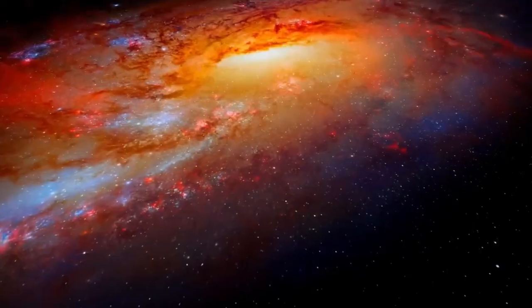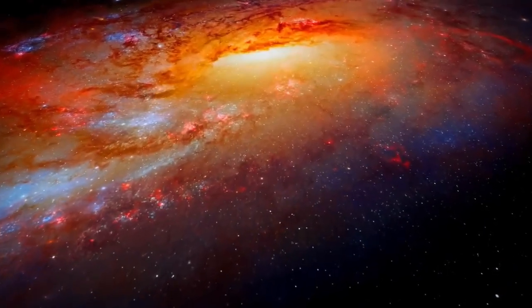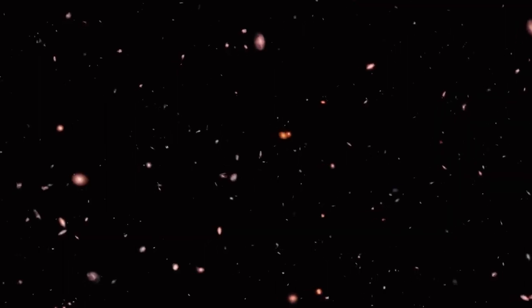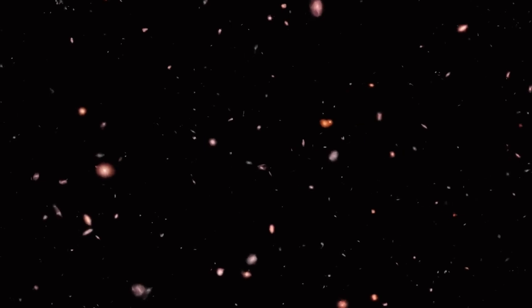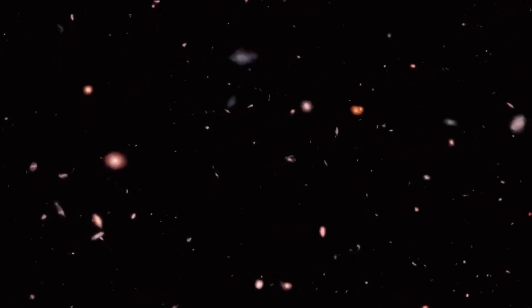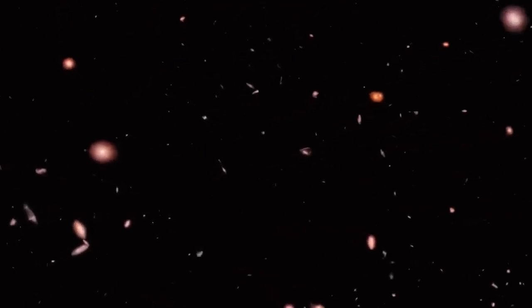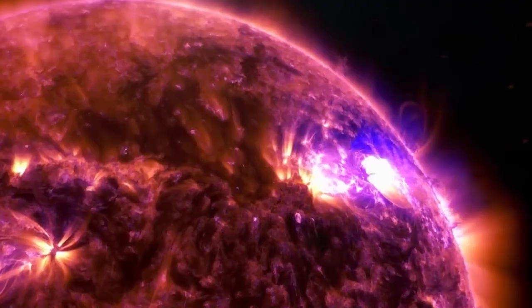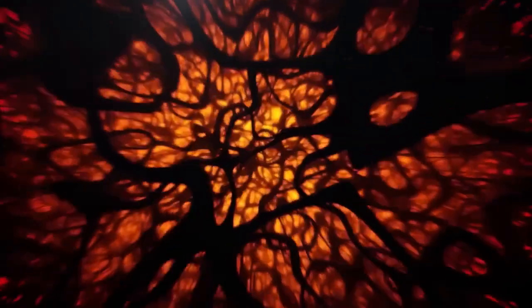Webb's observations suggest that the three distant objects, which are all from early in the universe's history, meet the key characteristics of dark stars. They were around just 300 million years after the Big Bang, but had the mass and maturity typically seen in galaxies billions of years old.